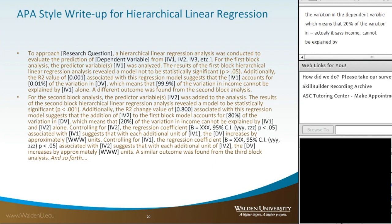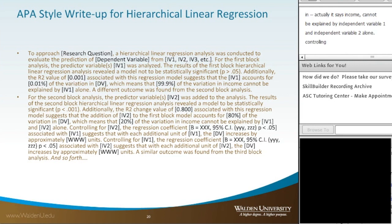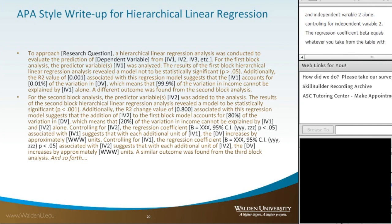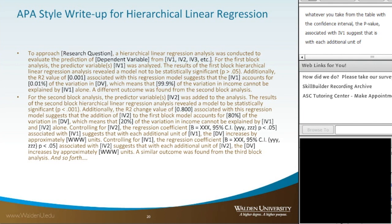Controlling for independent variable 2, the regression coefficient beta equals whatever you take from the table, the confidence interval, and the p-value associated with IV1 suggests that with each additional unit of IV1, the dependent variable increases by approximately so many units.